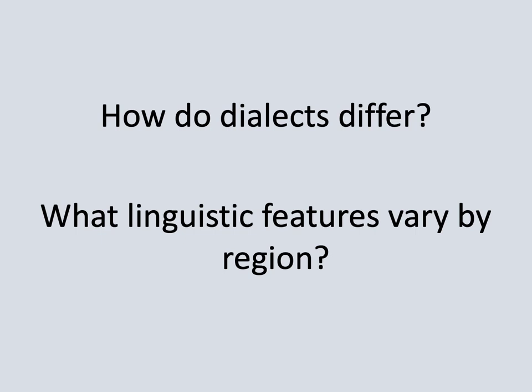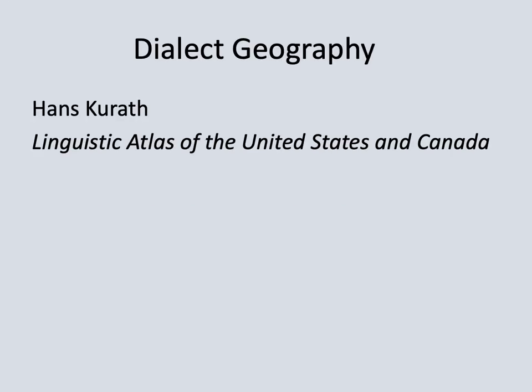If we think about how dialects differ, there are lots of particular linguistic features that vary by region. For some historical perspective, we can look at the work of Hans Kurath, mentioned earlier. Kurath founded the Linguistic Atlas of the United States and Canada in the 1930s, a research project that sent field workers out to interview people in various parts of the United States. It began on the East Coast, and involved interviewing mainly older people and people in rural areas, because they were interested in a conservative form of English to reflect the earliest divisions along regional dialect lines in American English.